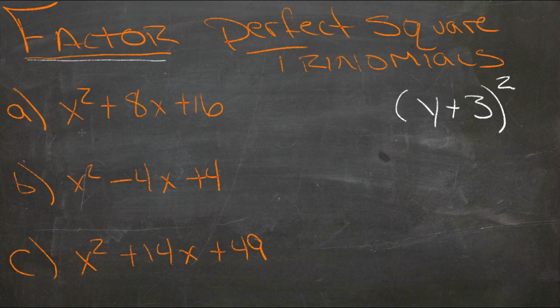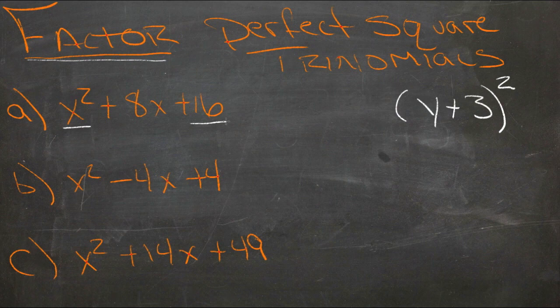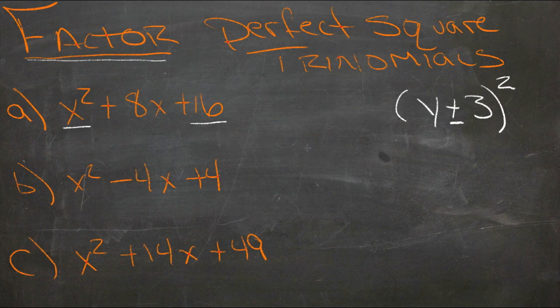Now in the long run you're going to discover that that binomial is generally the square root of the first term and the square root of the last term. And then we just take a look at the sign of the middle term to see whether there's a plus or a minus in between them. If the middle term is positive, there'll be a plus, and if the middle term is negative, there'll be a minus.